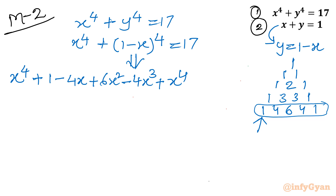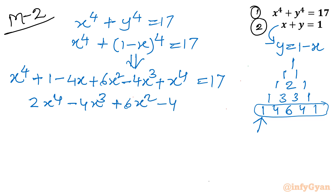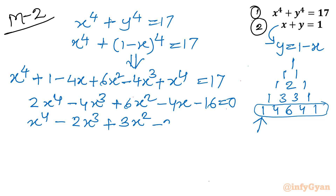The powers of x decrease from the constant term as the first term is 1. So x⁴ + (1 − 4x + 6x² − 4x³ + x⁴) = 17, which simplifies to 2x⁴ − 4x³ + 6x² − 4x + 1 − 17 = 0, giving 2x⁴ − 4x³ + 6x² − 4x − 16 = 0. Dividing by 2: x⁴ − 2x³ + 3x² − 2x − 8 = 0.